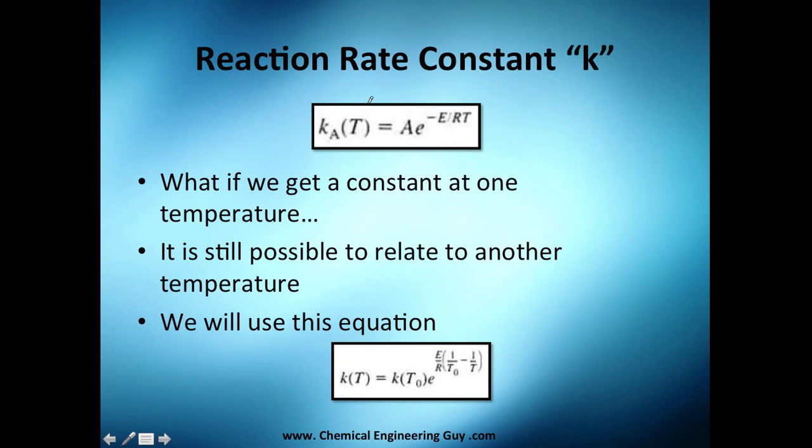What's up guys, let's do this reaction rate constant k value here. So what if we get a constant at one temperature? Recall the Arrhenius equation is here. It's the k at this value, and you can relate it because it's the pre-exponential factor times the exponent of this here.